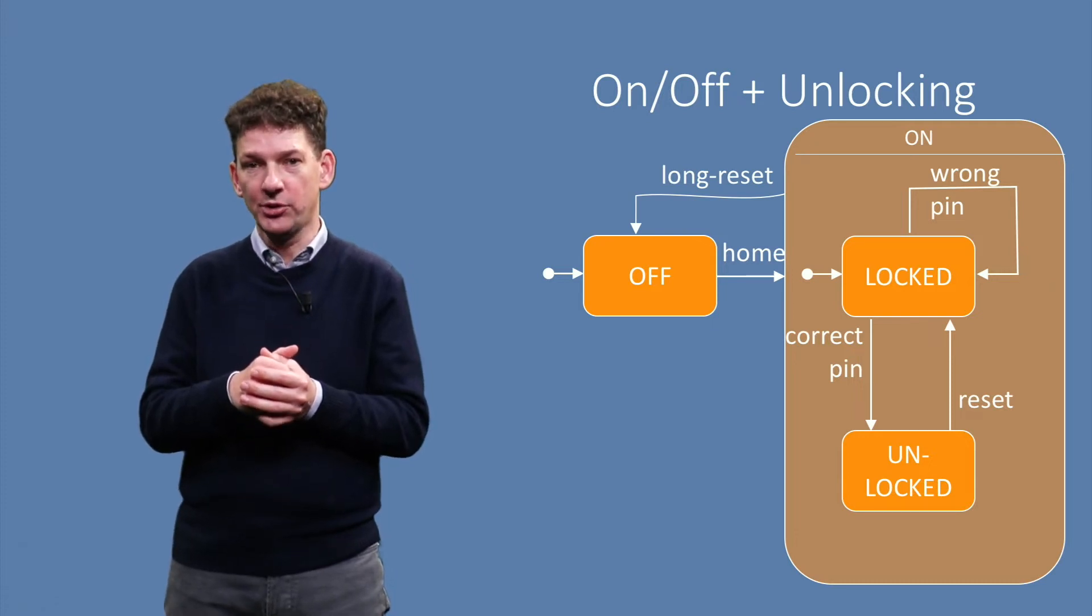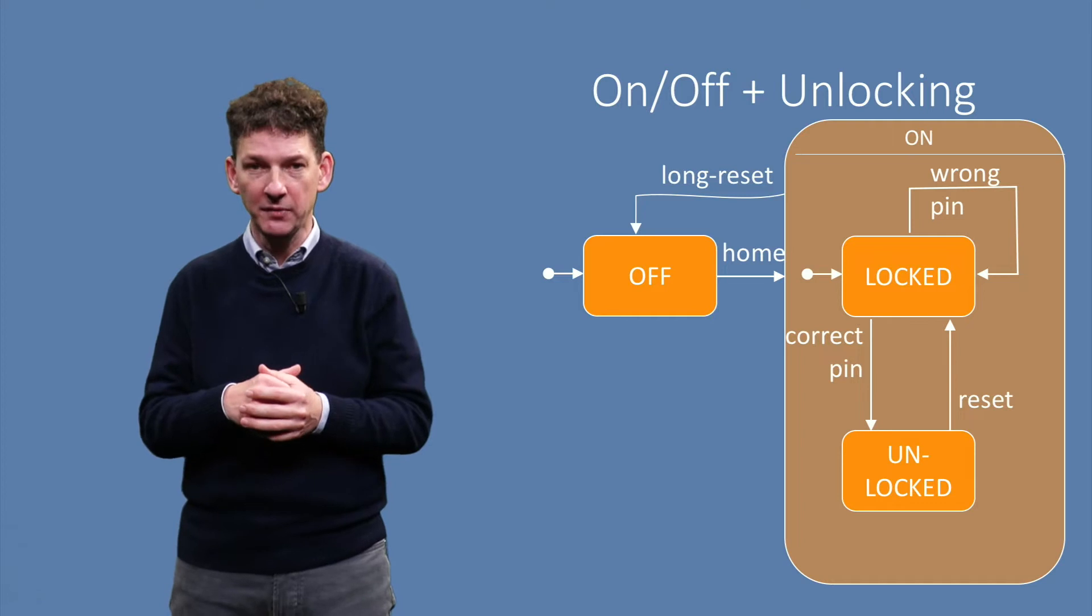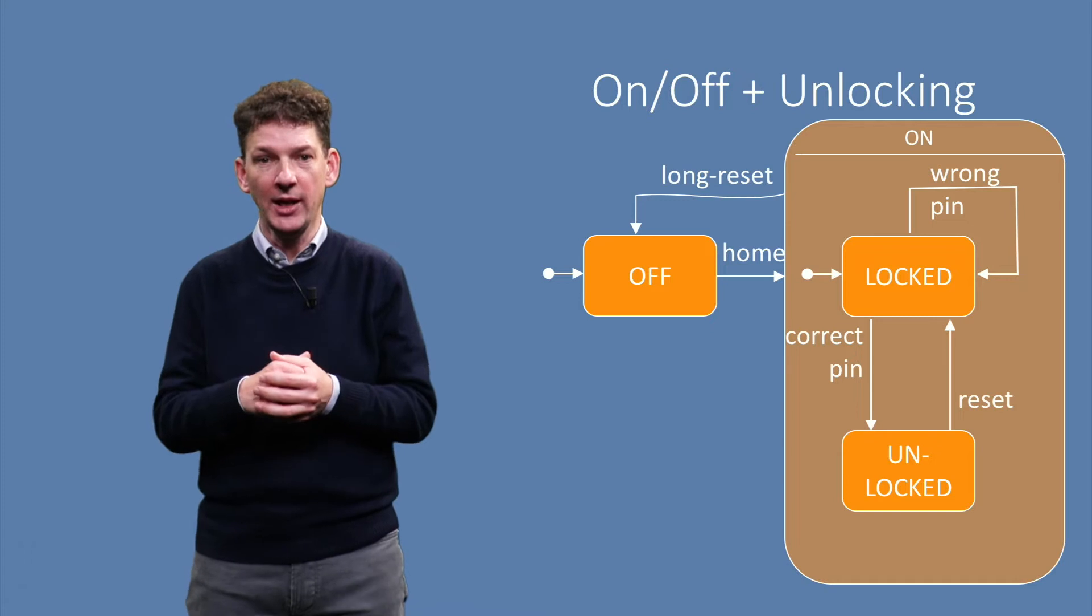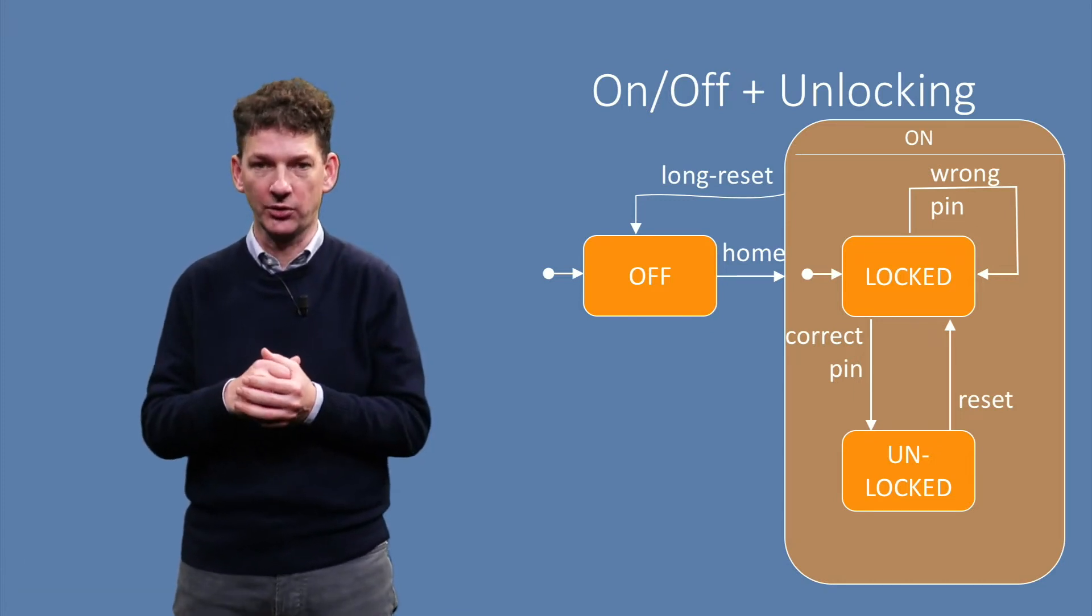The ON super-state has one incoming transition, with the HOME event starting in OFF. Upon entering the super-state, it propagates to the internal initial state of the super-state, in this case LOCKED.